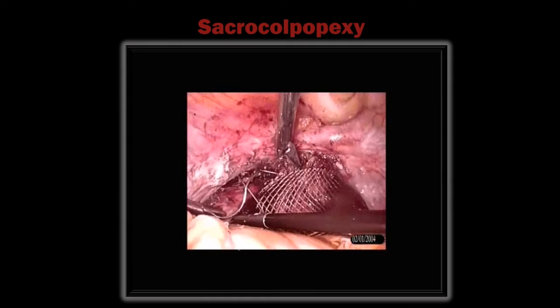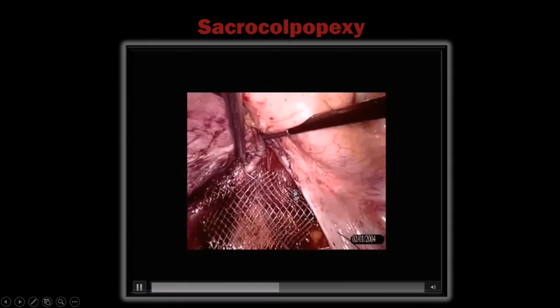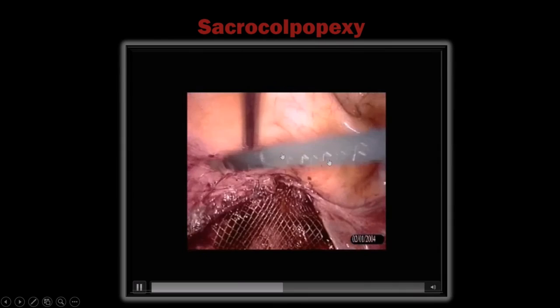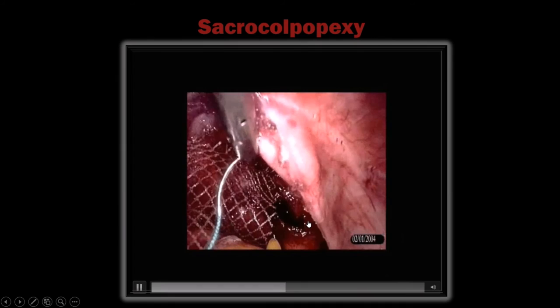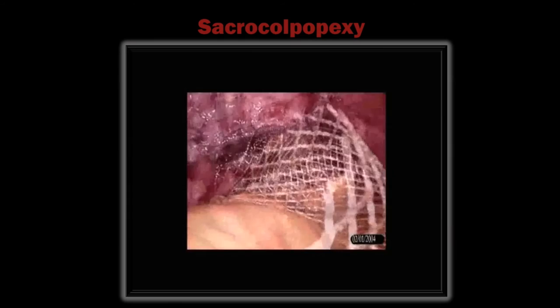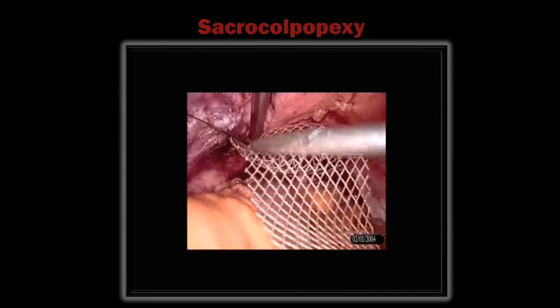The levator ani is a very strong muscle, felt easily with tactile feedback, and the assistant can guide identification. A bite is taken on the other levator ani. The middle of the mesh is sutured to the vaginal fascia — below that is the rectum. The side of the mesh is then sutured to the uterosacral ligament remnant on each side. Total five sutures are taken: two levator ani corners, the center to vaginal fascia, and two sides to uterosacral ligament remnants.